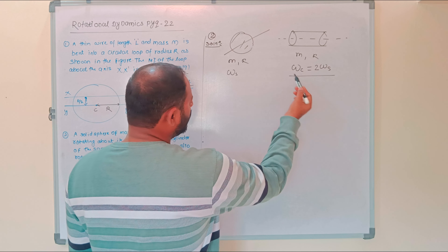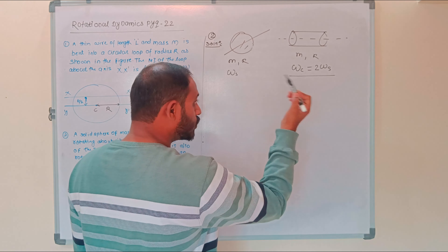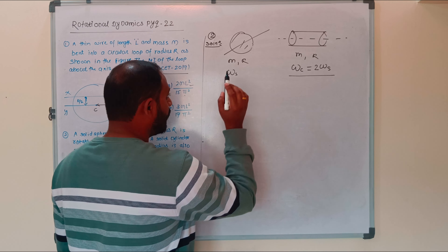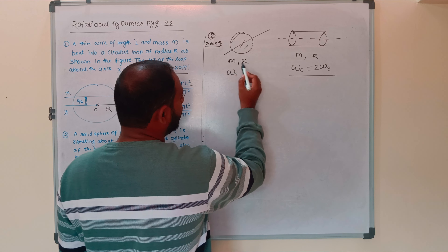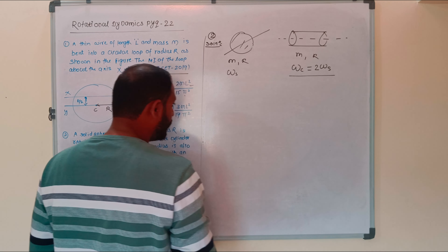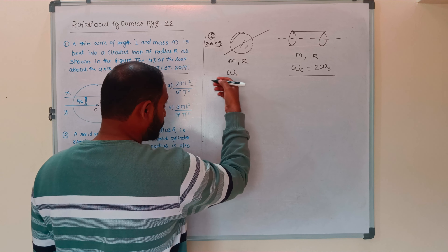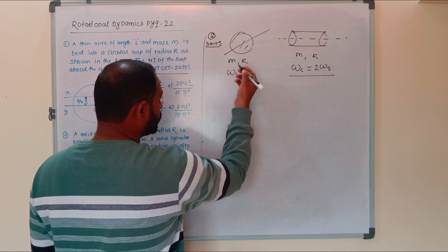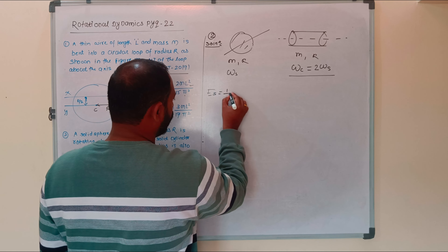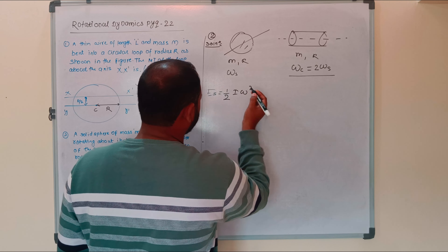The condition is: angular speed of solid cylinder = 2 × angular speed of solid sphere, with the same mass and radius. The rotational kinetic energy formula for the solid sphere is (1/2) I ω², where I and ω correspond to the sphere.